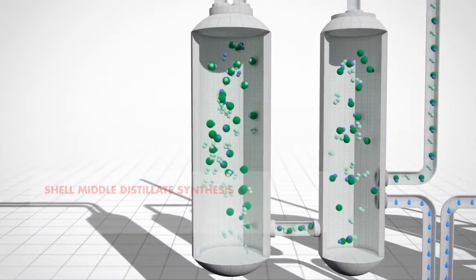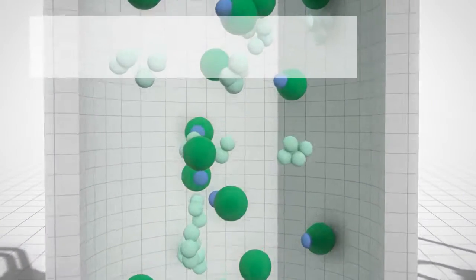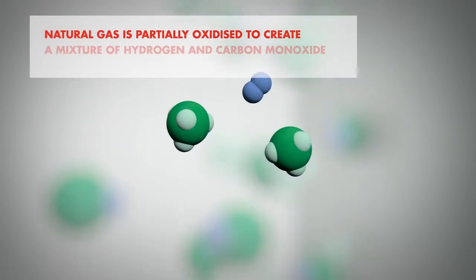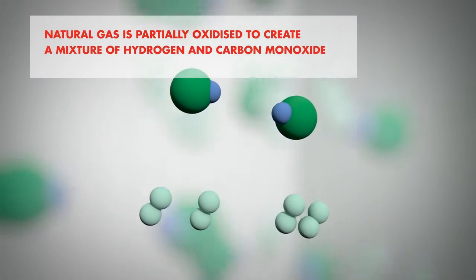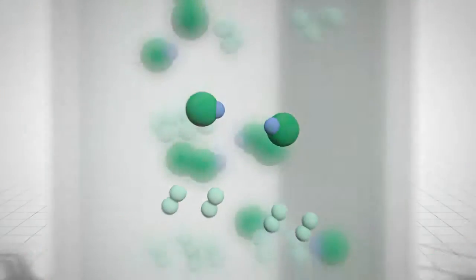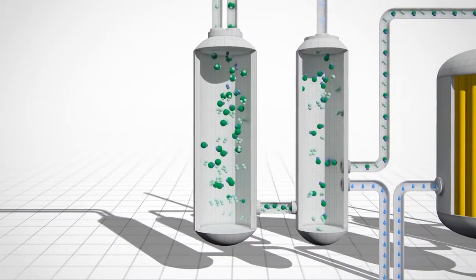The GTL process consists of three stages. In the first stage, natural gas is partially oxidized to create a mixture of hydrogen and carbon monoxide, which is then known as synthesis gas, or syngas. Impurities are removed from the syngas.